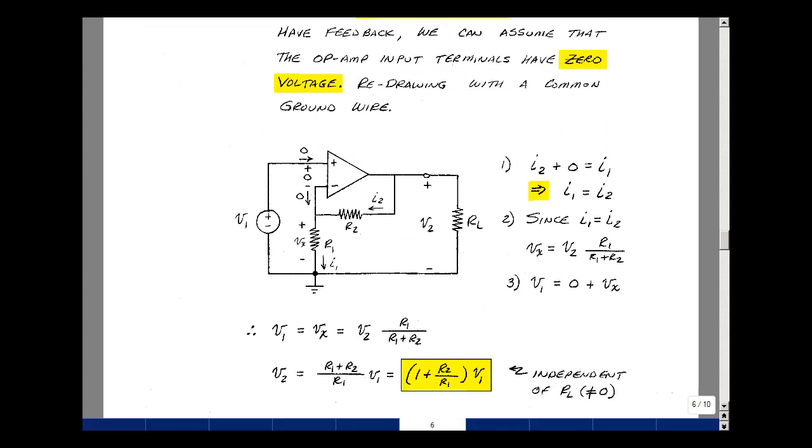Let me assign a current in the resistors. I'll call this I2 for R2 and I1 for R1. You can pick any direction, but once you pick it, we're just going to stick with it. And I'll label this voltage across R1 as V sub X.